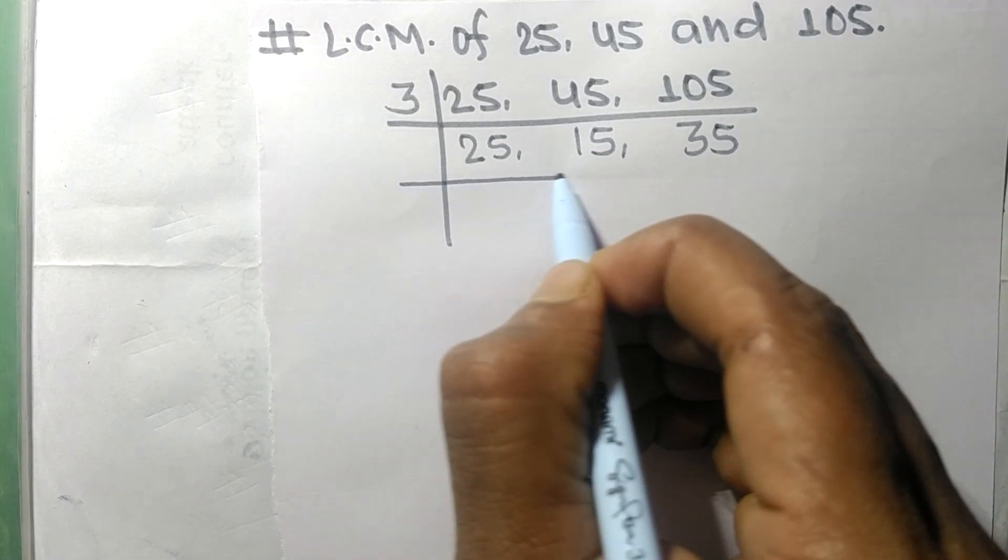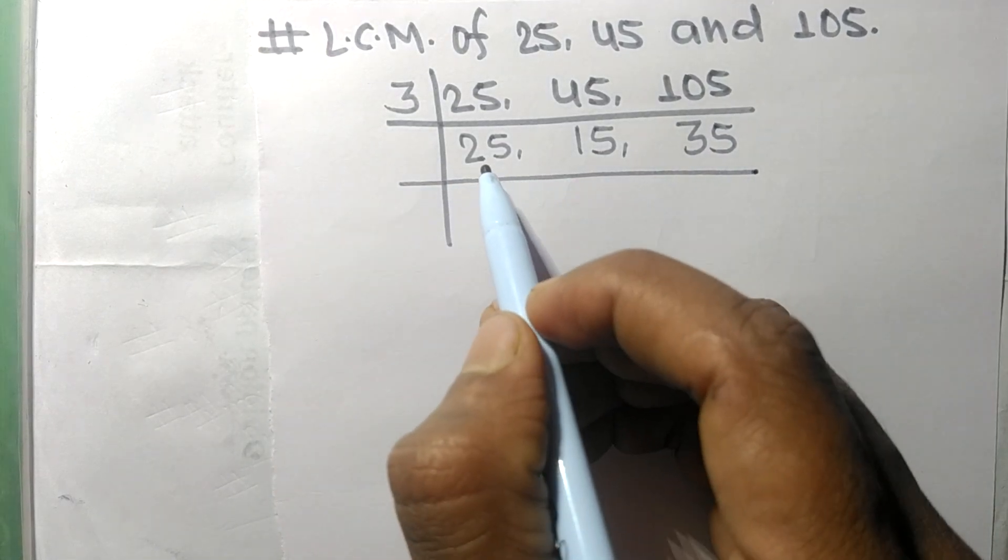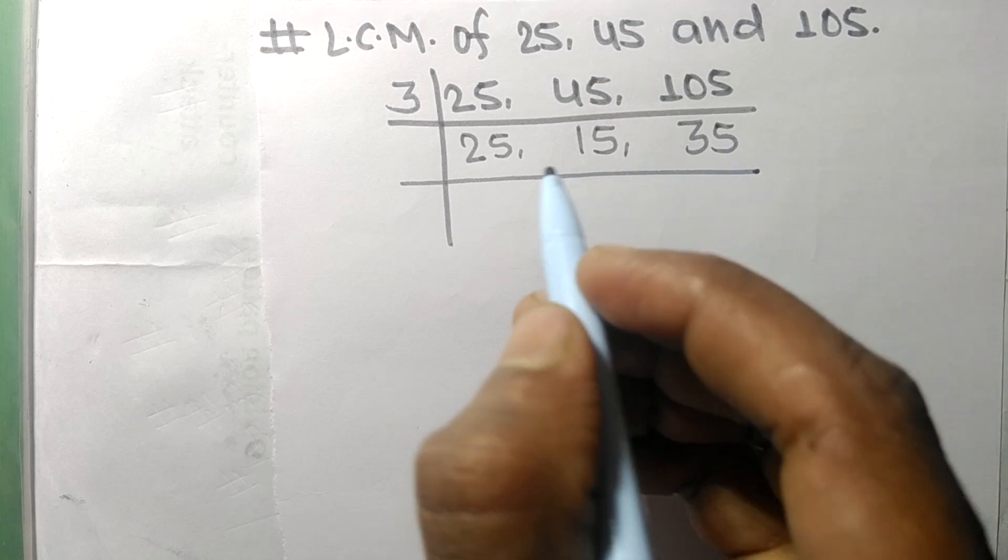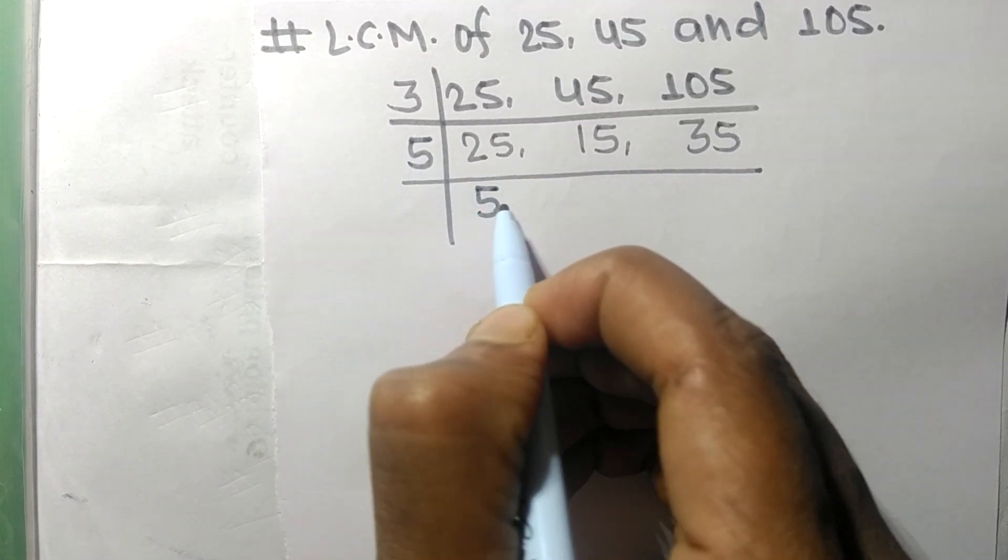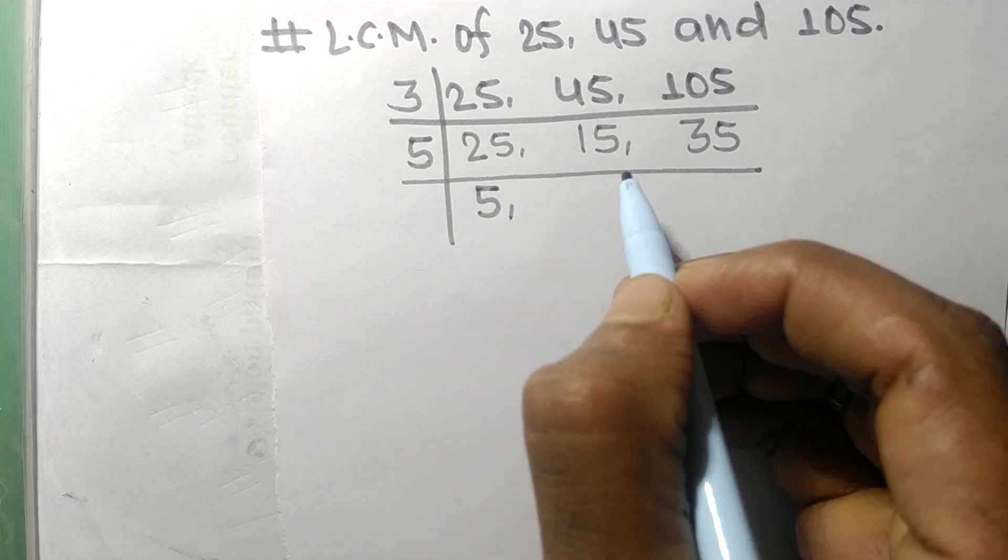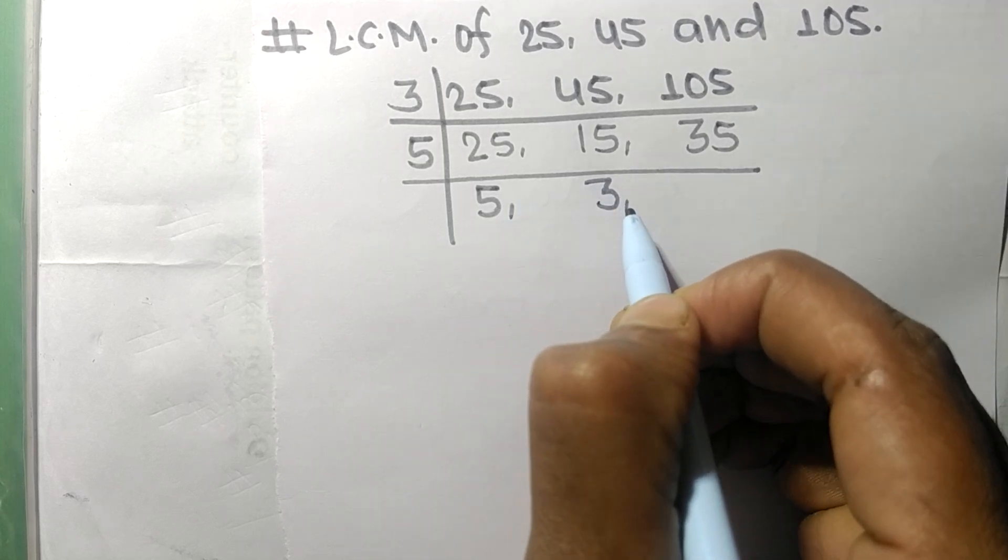All these numbers are exactly divisible by 5. 5 times 5 equals 25, and 5 times 3 equals 15.